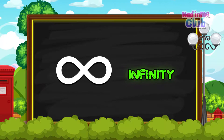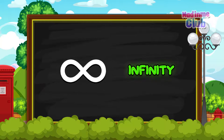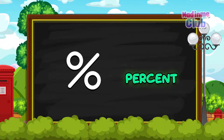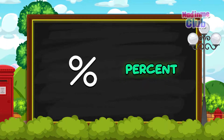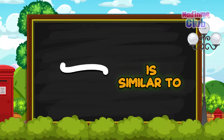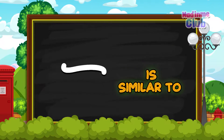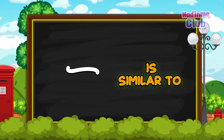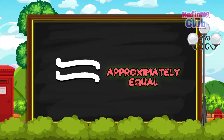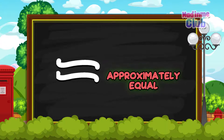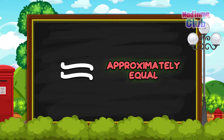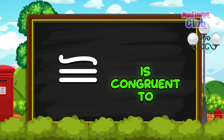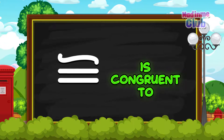Infinite — McDonald's had a farm, E-I-E-I-O. Percent. Is similar to — Oh, McDonald's had a farm, E-I-E-I-O. Approximately equal. Is congruent to.